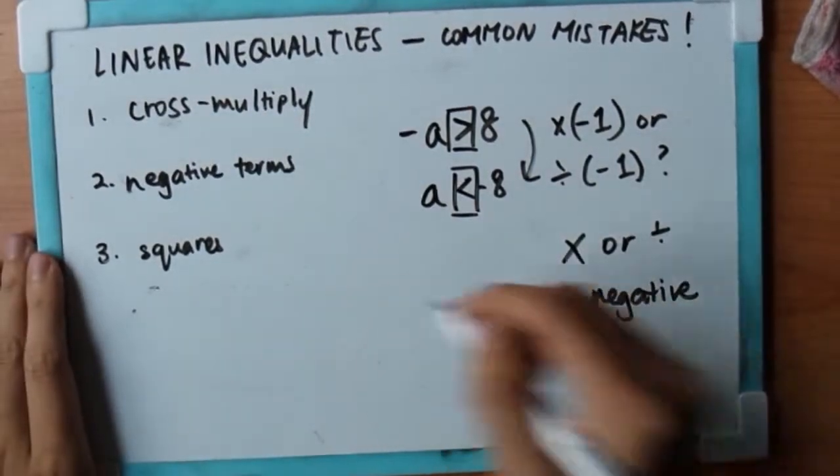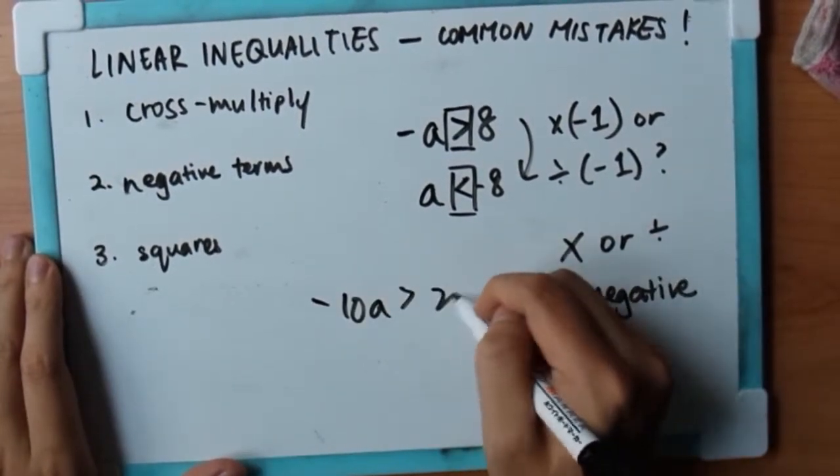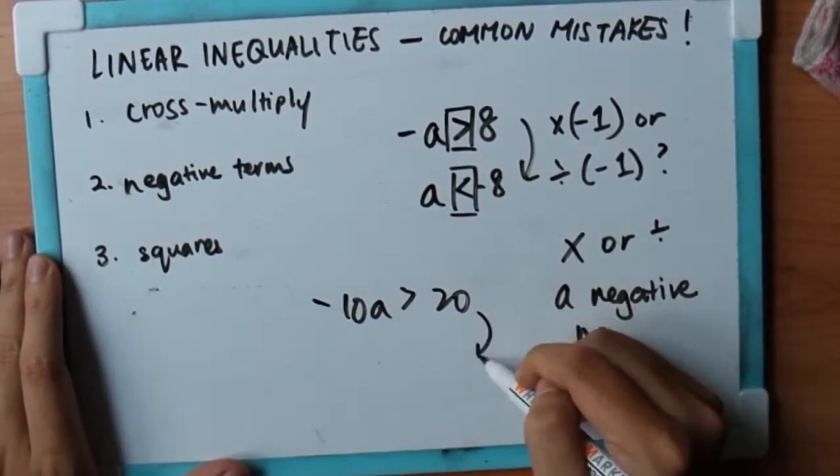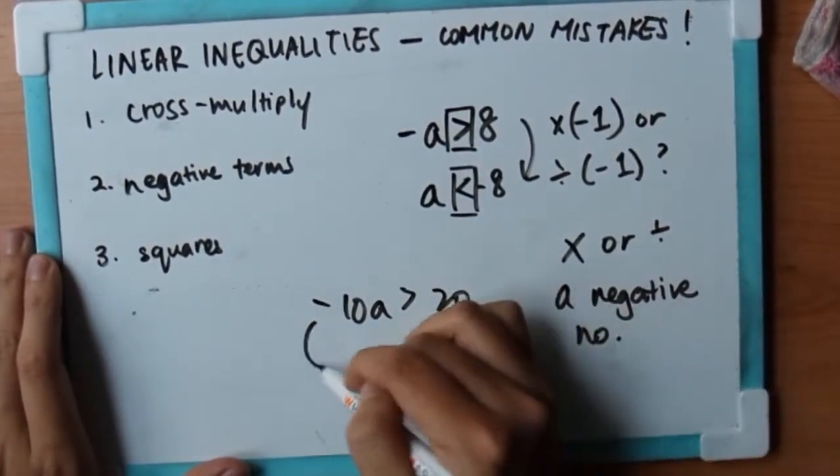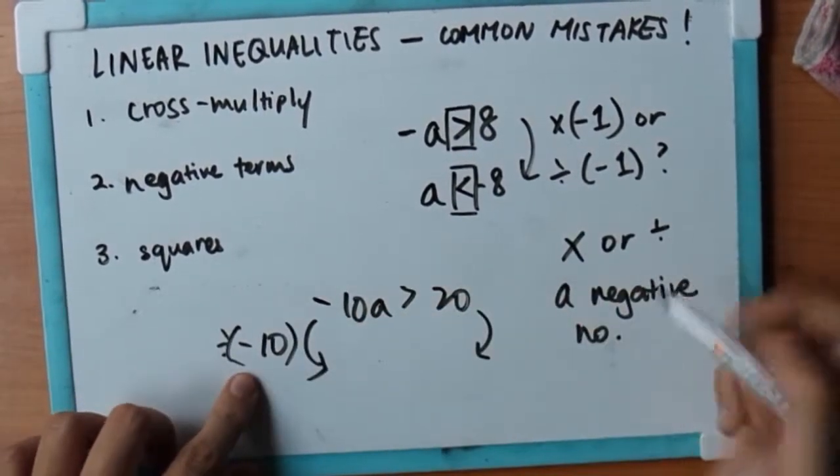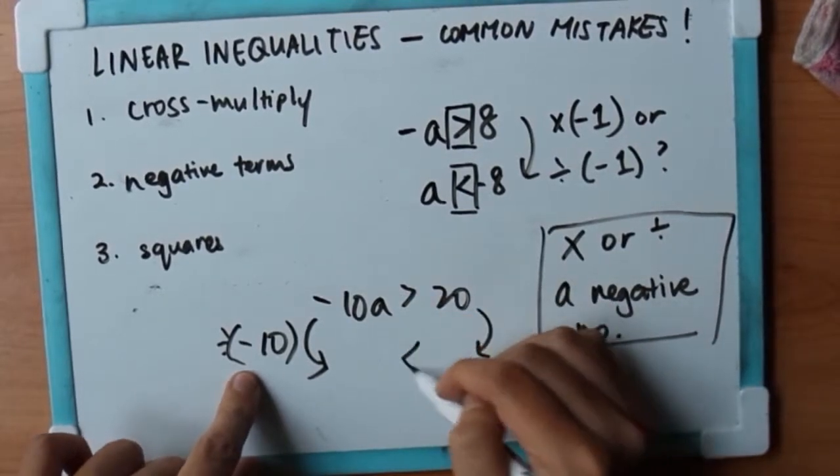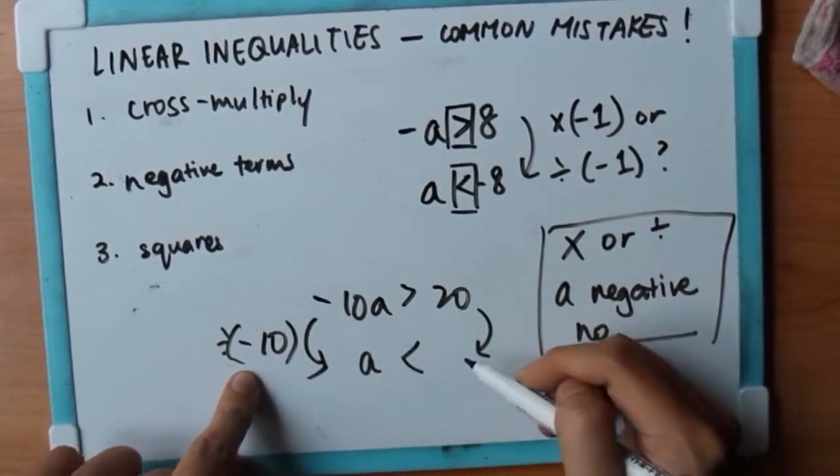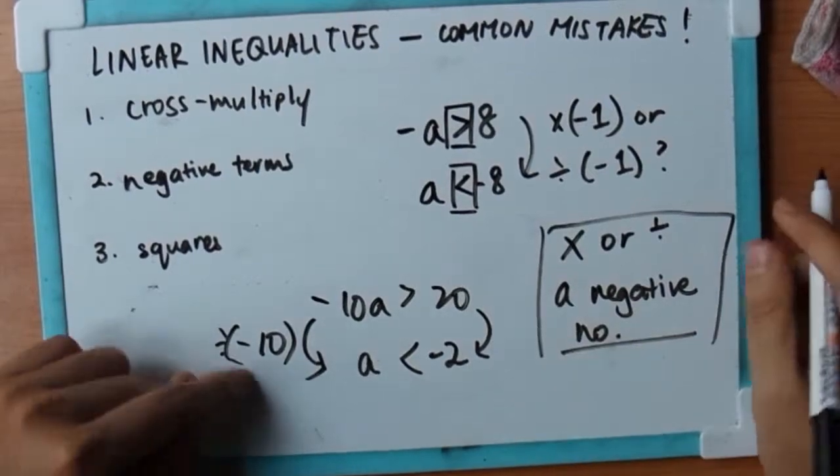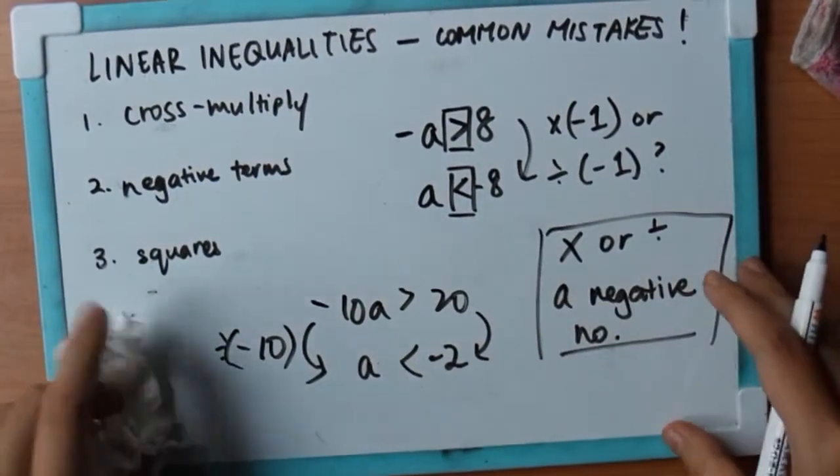So I can give you maybe another example, very quick one. So what do I do? I'm gonna divide by negative 10, correct? So as you can see, it fulfills this condition, right? So that means my sign has to change. 20 divided by negative 10, minus 2. So that's just for question 2, I'm going to talk about 3 now.